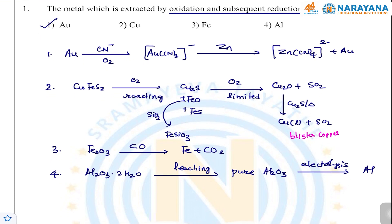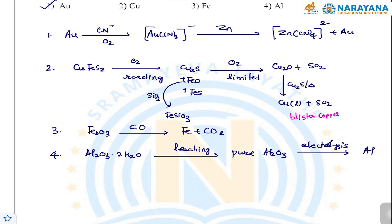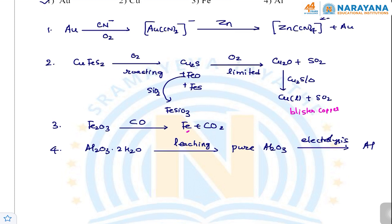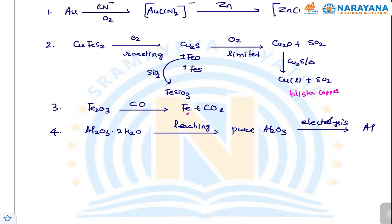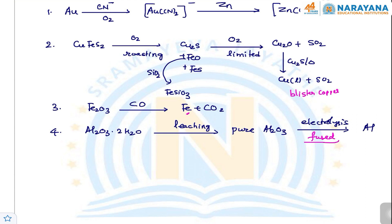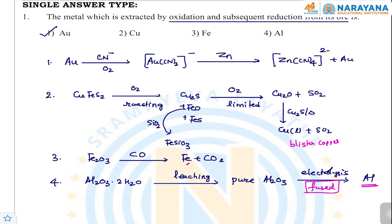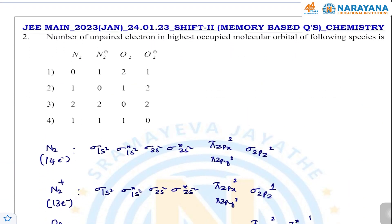For copper, roasting and self-reduction are involved. For iron extraction, reduction by carbon monoxide is the chief reducing agent — CO reduces Fe2O3 to Fe. For aluminum, bauxite is subjected to leaching to get pure Al2O3, which is then subjected to electrolysis in the fused state using carbon electrodes to get aluminum at the cathode. So gold is the correct answer — a repeated question.